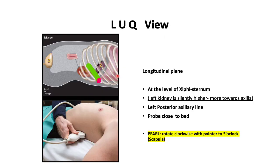For the left upper quadrant view, we are looking for free fluid around the spleen and kidney. The probe is placed in the posterior axillary line in a coronal section with the probe marker towards the head. It is important that when scanning on the left side, your probe is almost touching the bed because you are in the posterior axillary line. Remember that the kidney on the left side is slightly higher compared to the right side.